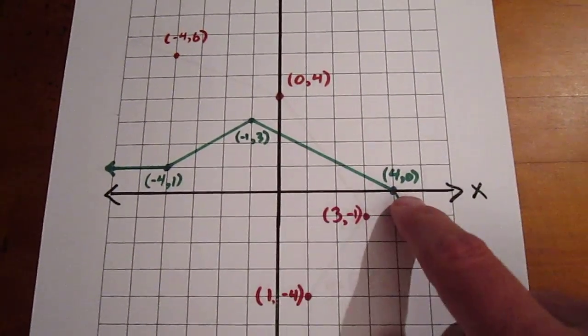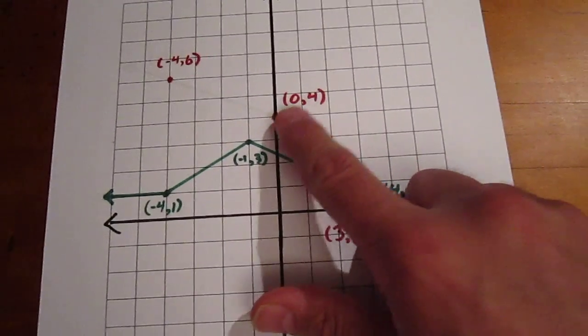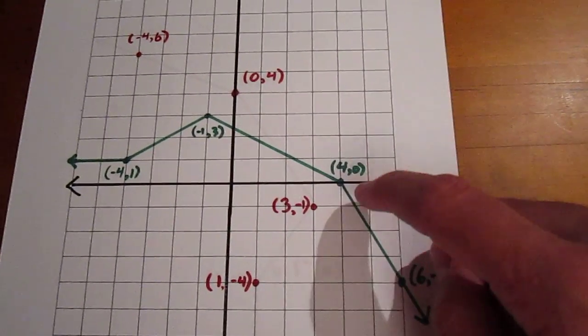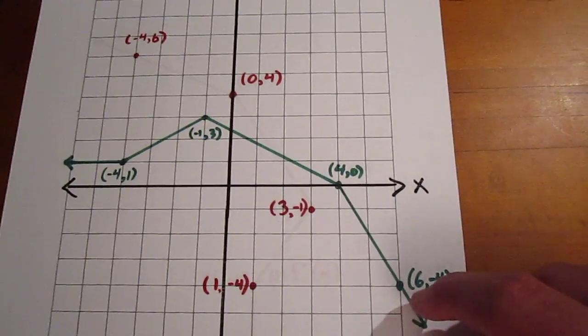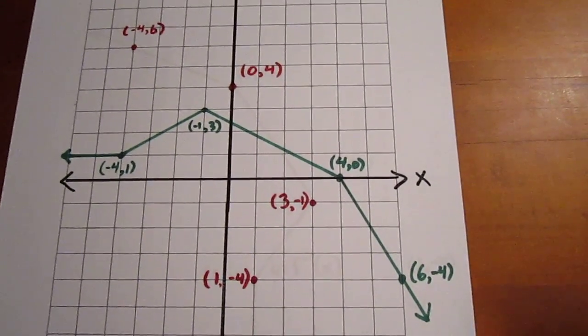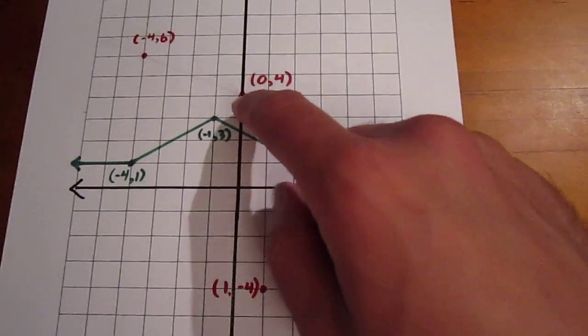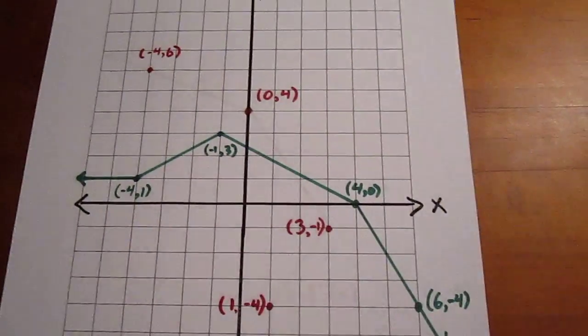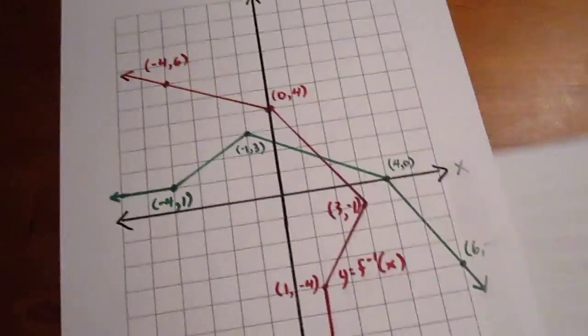We connect from negative 1, 3, to 4, 0, so the images should do the same. And from 4, 0 to 6, negative 4, and beyond, we continue infinitely in a linear fashion, so the image should do the same. And in fact, it does.